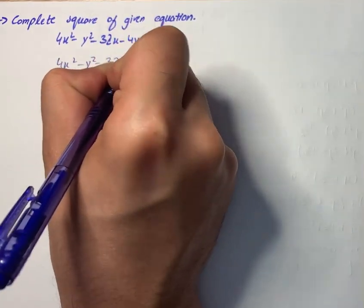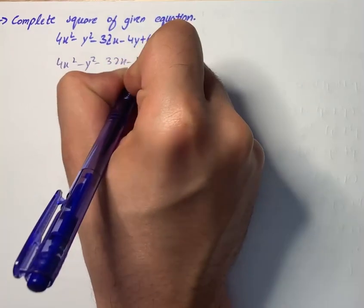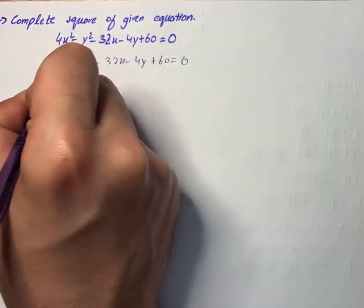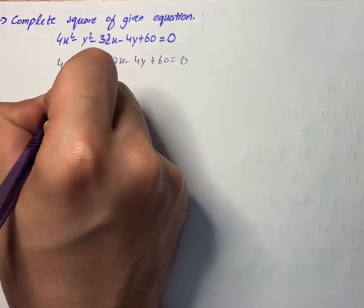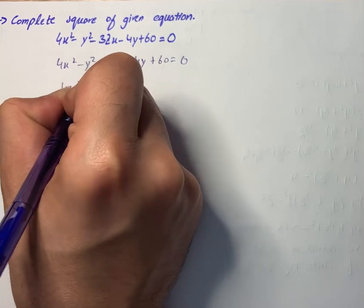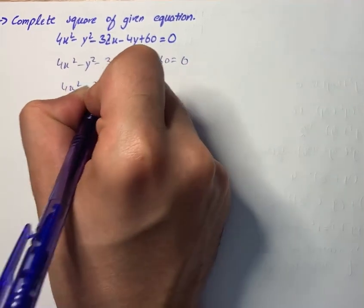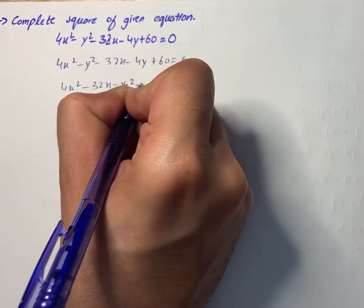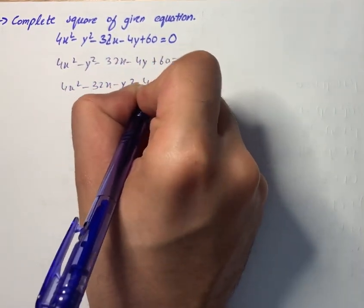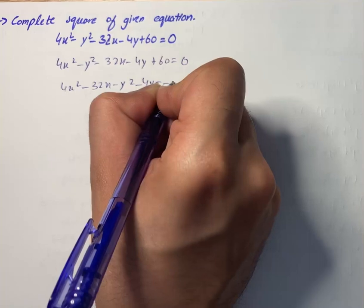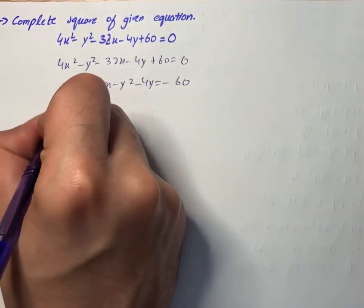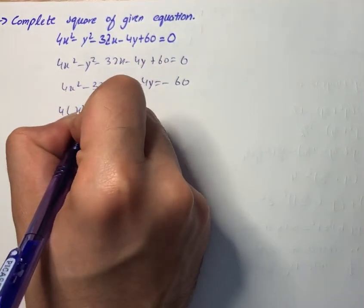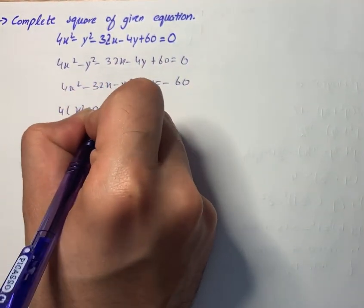Then we have 4x² − 32x − y² − 4y = −60. We will factorize and we have 4(x² − 8x) − y² + 4y = −60.